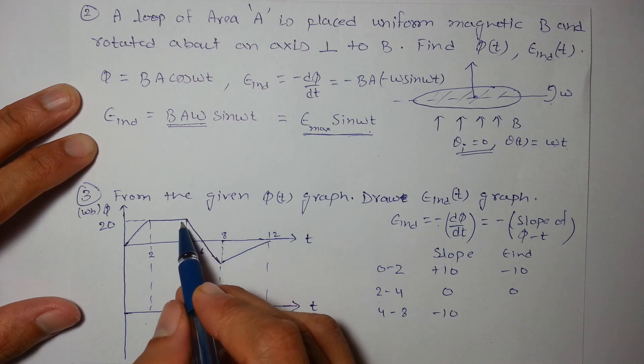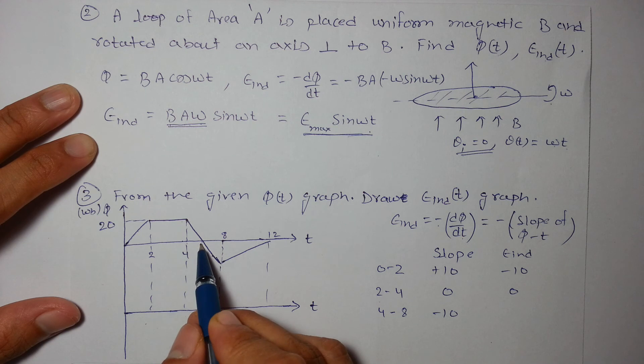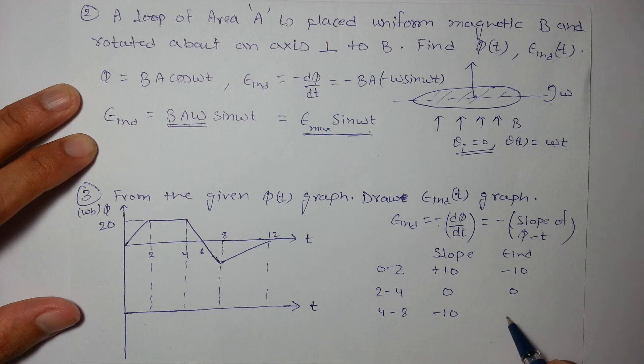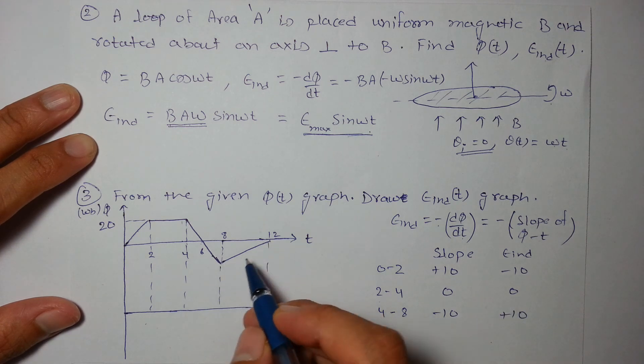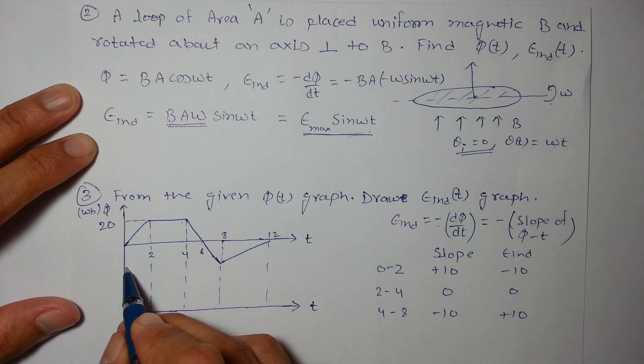The slope is how much it has reduced in how much interval. So 20 reduction in 2 seconds means 10 reduction in 1 second. So the EMF induced will be +10.